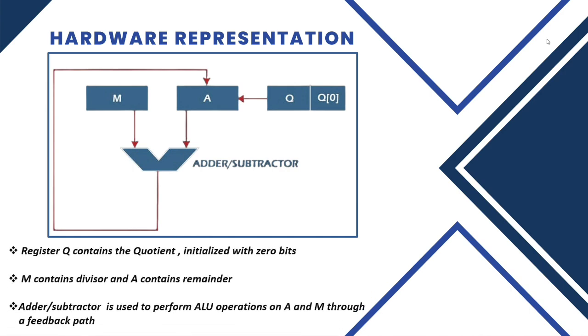First is M register, it stores the value of divisor. Second is A register. A stands for accumulator, it is a special function register which stores the result of ALU operation. Here, accumulator contains the remainder.